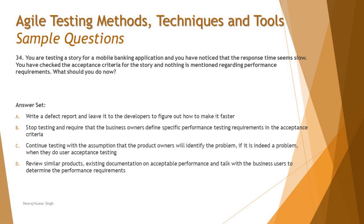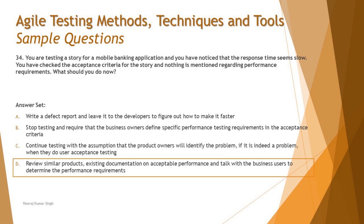Option D says: review similar products and existing documentation on acceptable performance, and talk with the business user to determine the performance requirement. This is what I've been explaining — we inform the business about our observations and let them take a call. It's not necessary that they forgot to mention it or that they are interested; it's their decision. So the right answer here is D: review similar products, existing documentation on acceptable performance, and talk with the business user to determine the performance requirements.